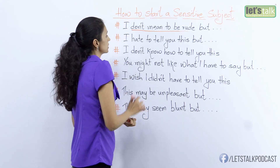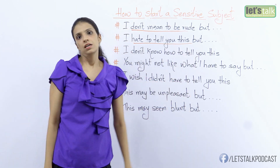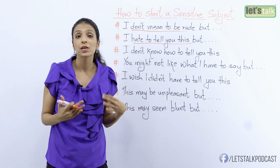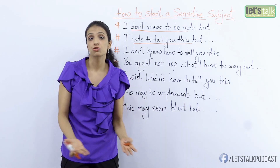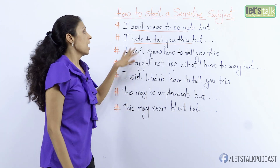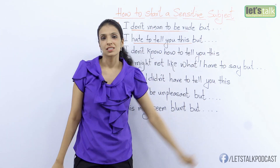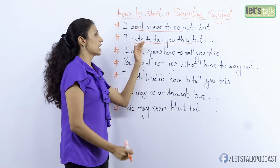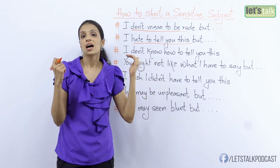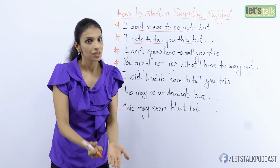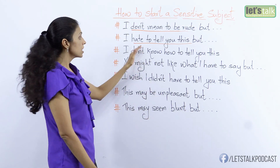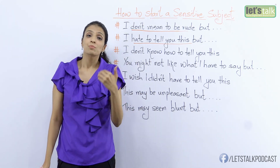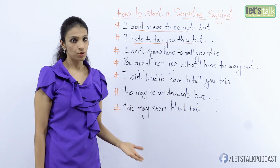Now the next way is: 'I hate to tell you this' — even more intense than the first one. It means that you are really not happy even to break some news or give information or speak about something sensitive. For example: 'I hate to tell you this, but the dress doesn't look good on you. You shouldn't wear something like this the next time you are out.' It shows that you're not happy to tell her what you're about to tell her. This is another way of introducing a sensitive subject or passing a remark that could offend someone.